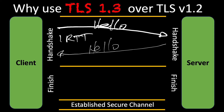The reason why we have that shorter handshake is because in the initial hello, we're not saying 'here's the ciphers that we support and then the server selects one.' We're actually stating the cipher that we're going to choose upfront.